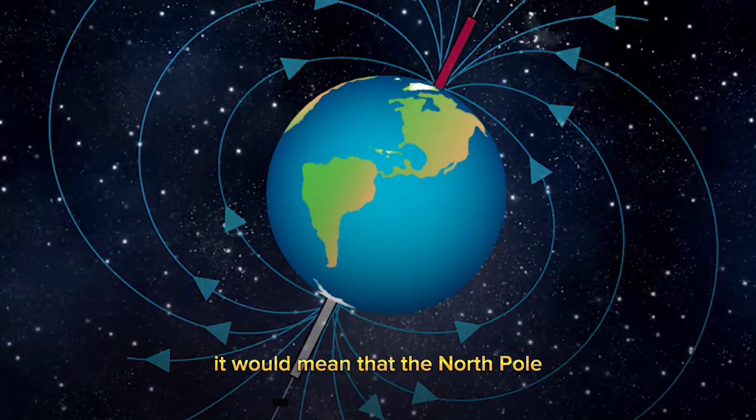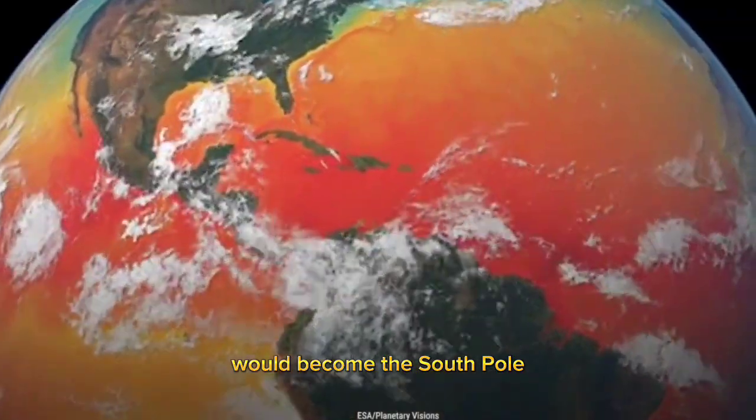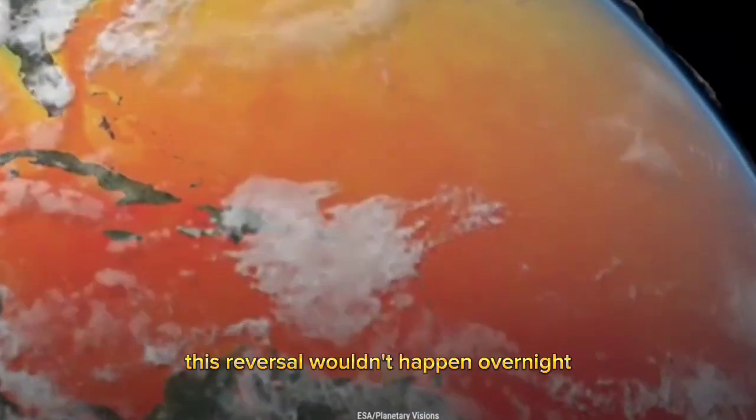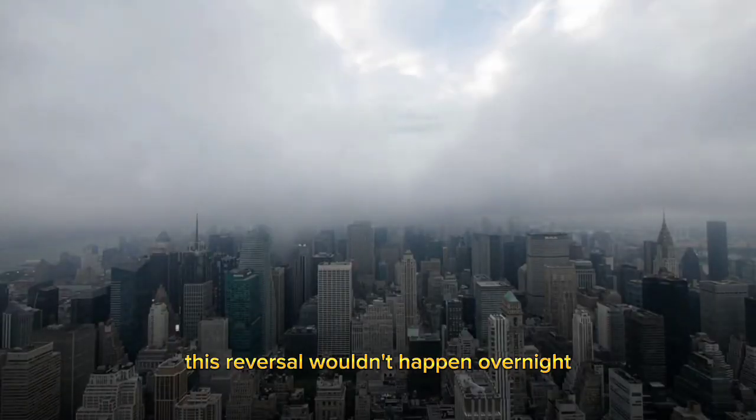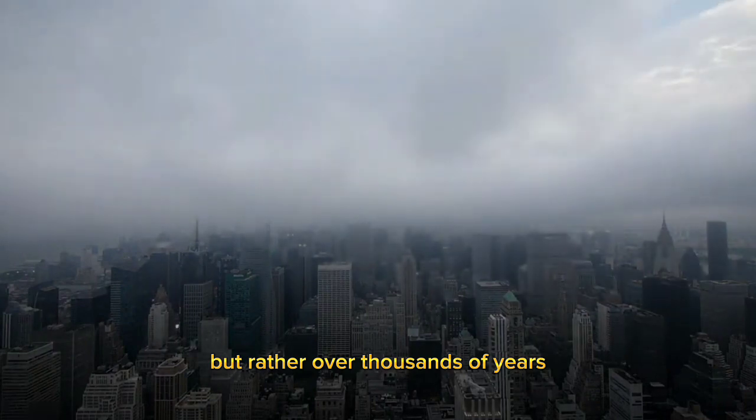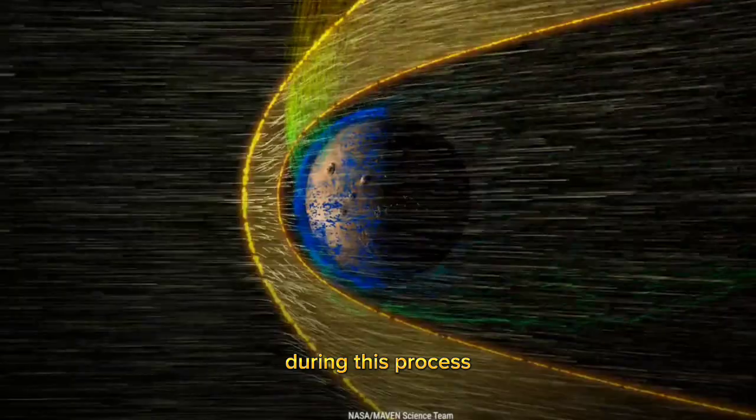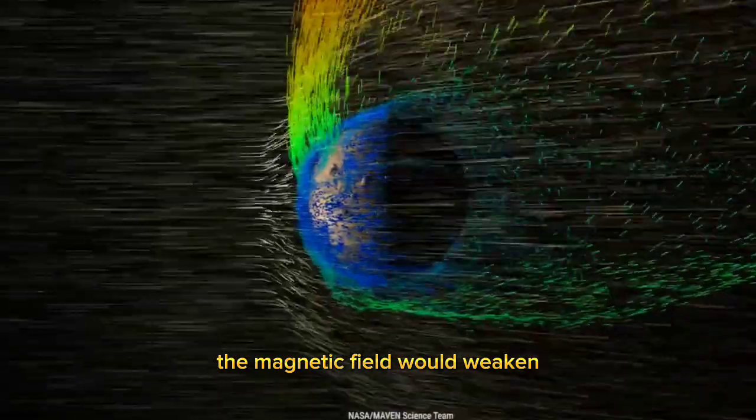If the magnetic poles were to reverse, it would mean that the north pole would become the south pole and vice versa. This reversal wouldn't happen overnight, but rather over thousands of years or even longer. During this process, the magnetic field would weaken, leaving us more exposed to the solar wind and cosmic rays.